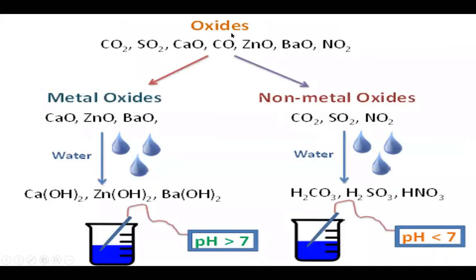Today we are going to discuss oxides. Here are some examples: carbon dioxide, sulfur dioxide, calcium oxide, carbon monoxide, zinc oxide, barium oxide, and nitrogen dioxide. Among these, calcium, zinc, and barium are metals, so their oxides are metallic oxides. While carbon, sulfur, and nitrogen are nonmetals, so their oxides are nonmetallic oxides.